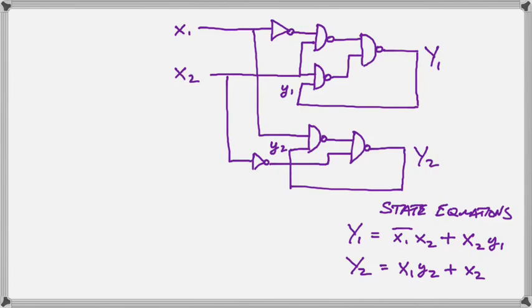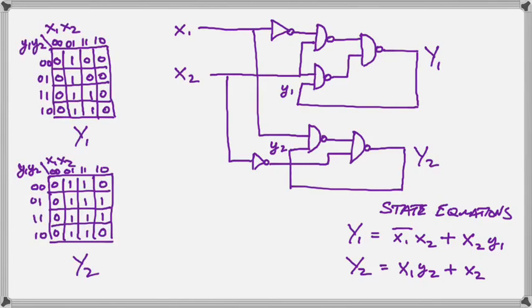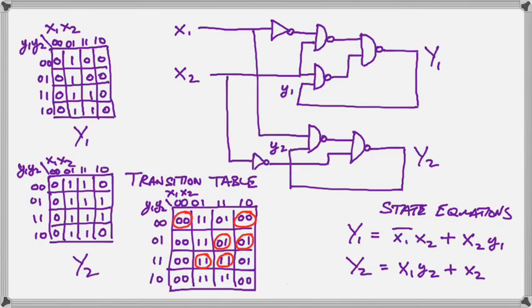And when we draw the two Karnaugh maps for y1 and y2, we end up with the same arrangement, except now we have a 16 square map because we have two inputs as well as two outputs. So we combine those two maps into one in the same way we did in the last one, putting the y1 square in front of the y2 square, and we get the transition table.